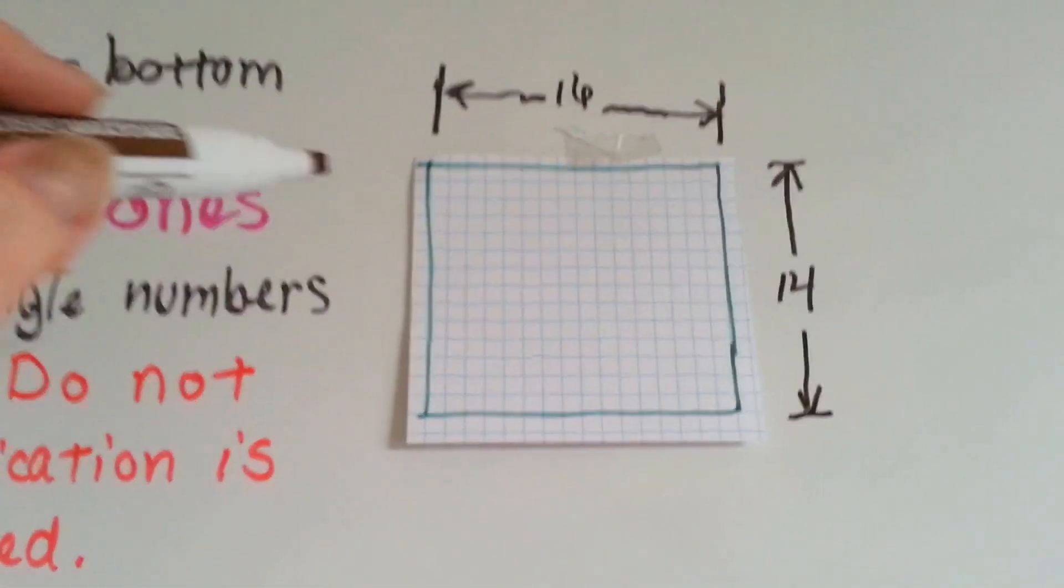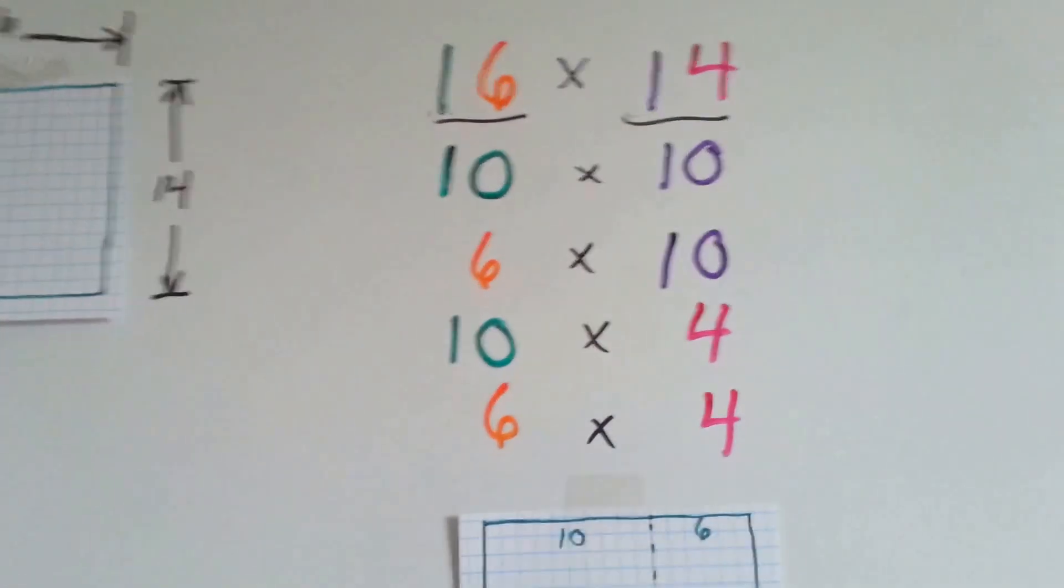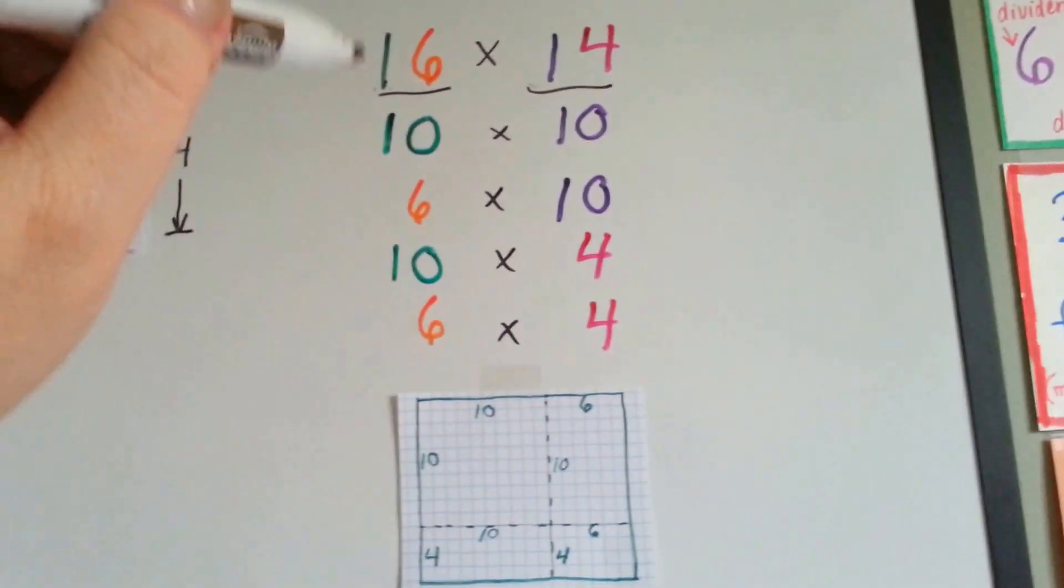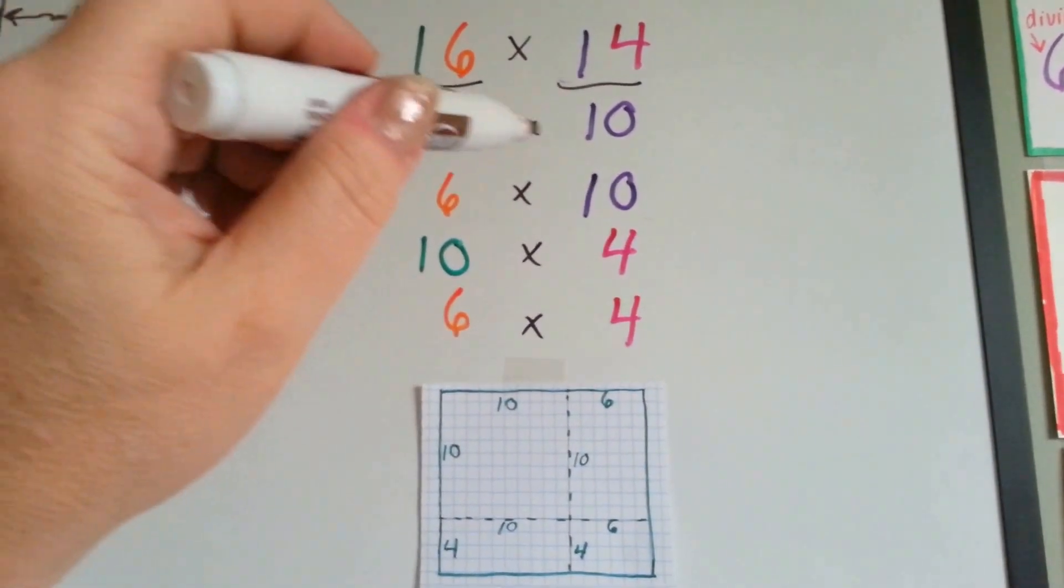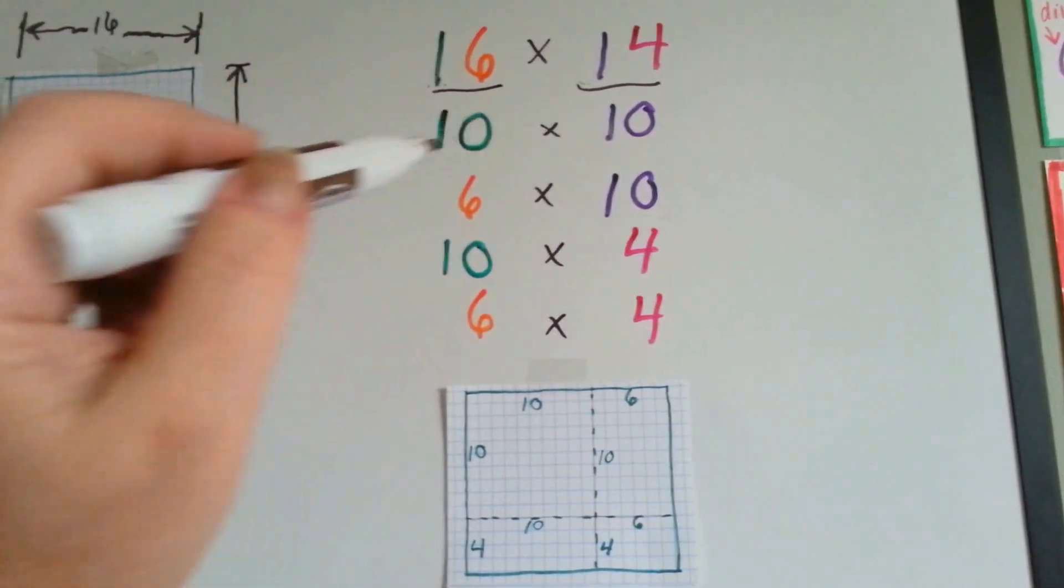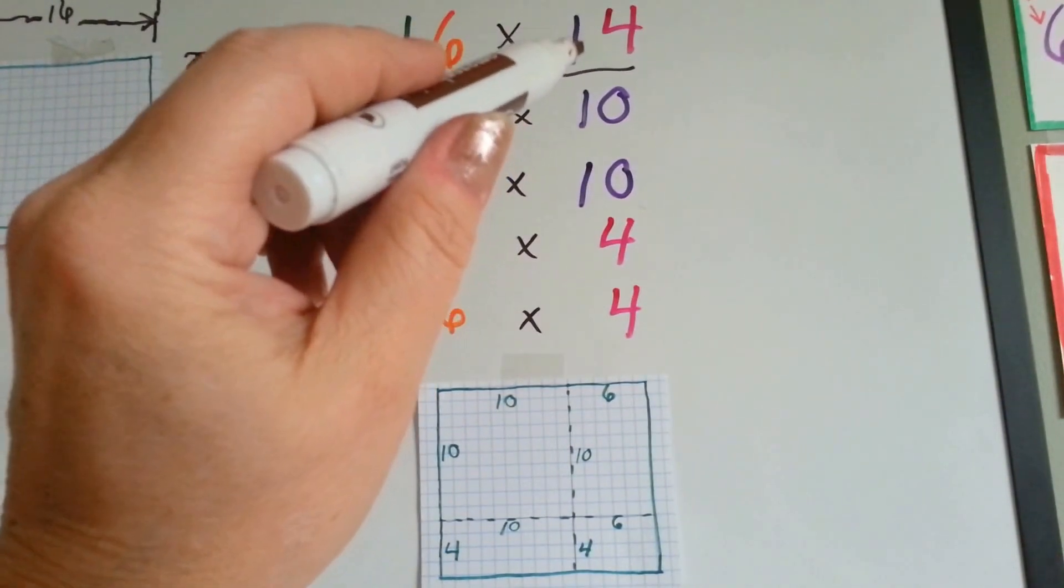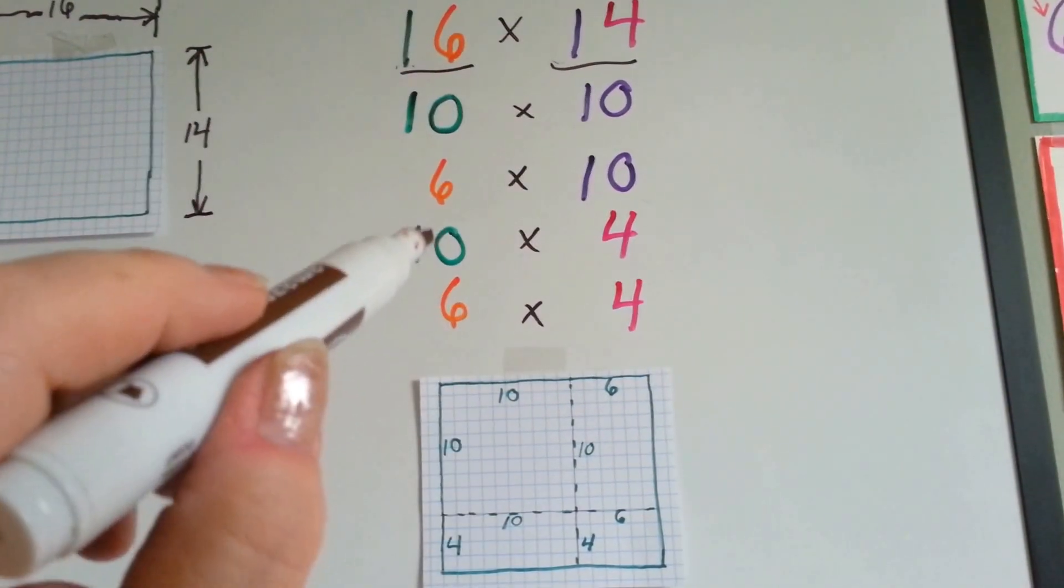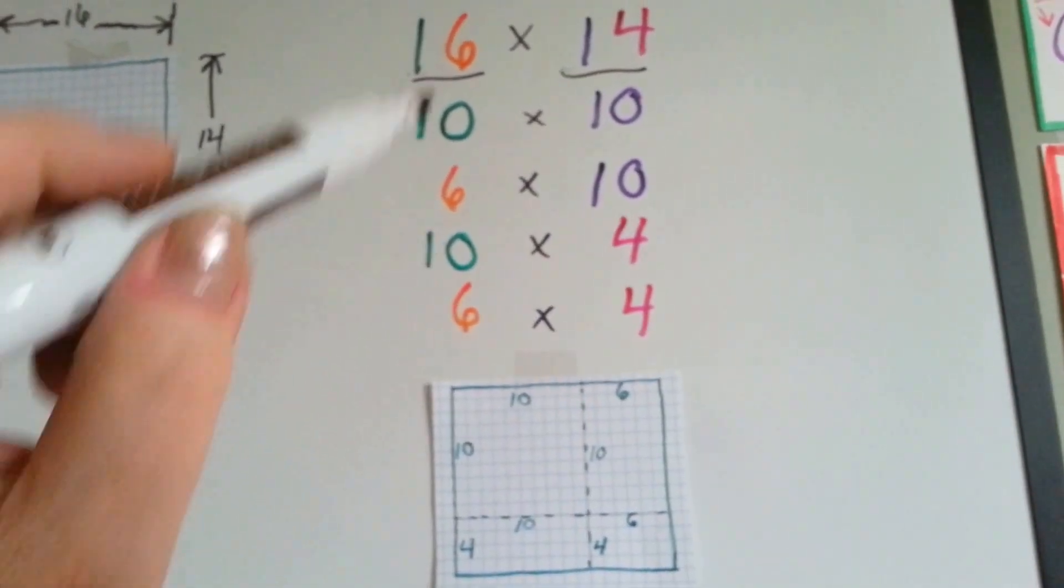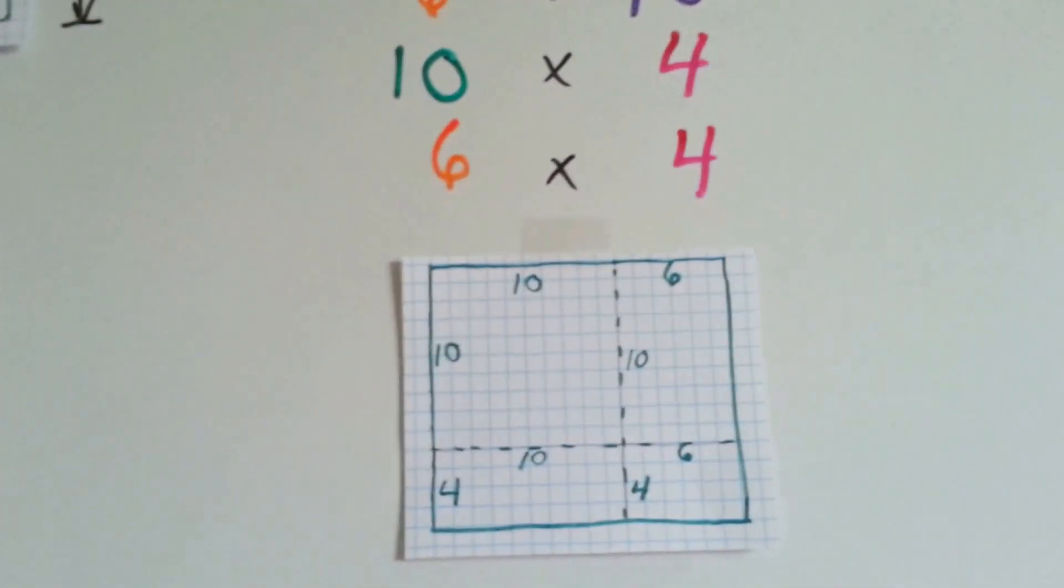So, we've got a 16 by 14 box here. This is how it's going to be split up, so pay really close attention to these colors. We've got 16 times 14. We're going to multiply the 10 from the 16 times the 10 from the 14. The green one times the purple one. Then we're going to multiply the 6 from the 16 to the purple 10 in the 14. Then we're going to multiply the green 10 from the 16 to the pink 4 in the 14, and then we're going to multiply the 6 and the 4. And each one of these is a little box that ends up being made in our rectangle.